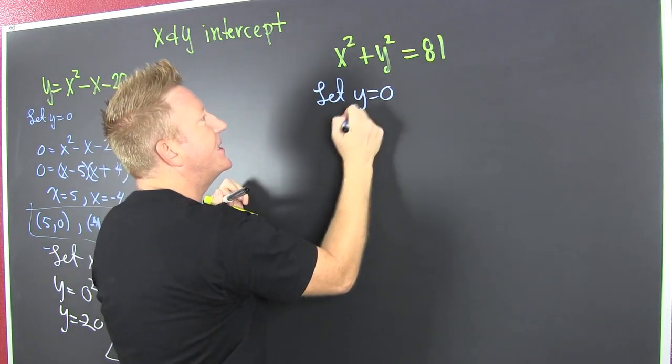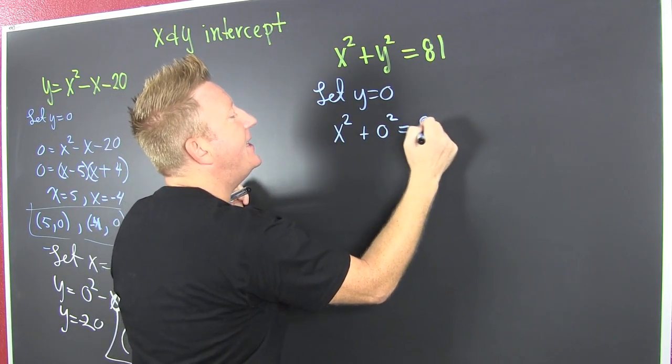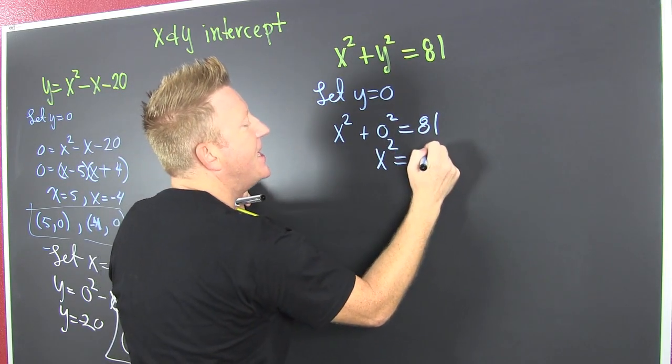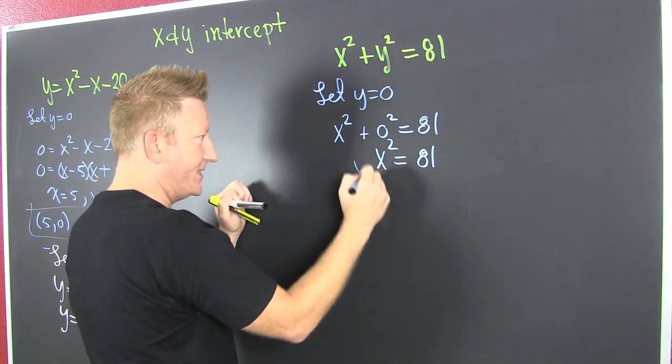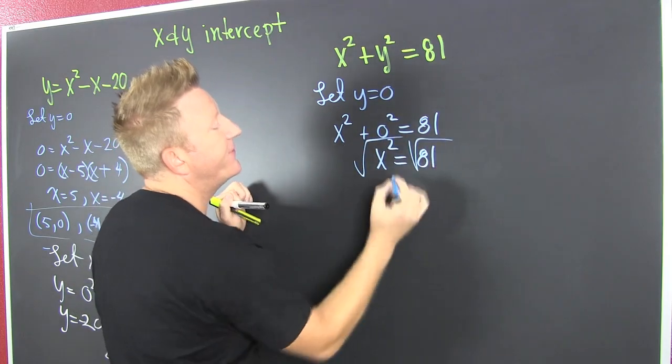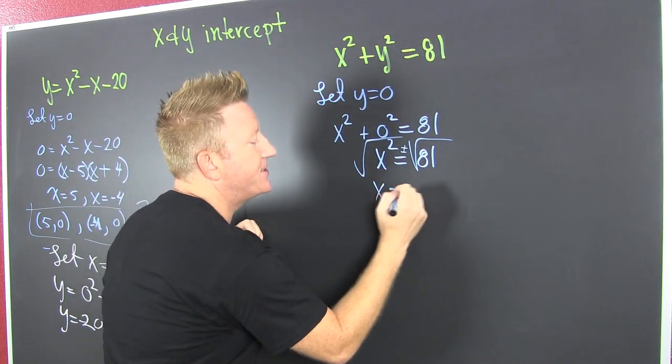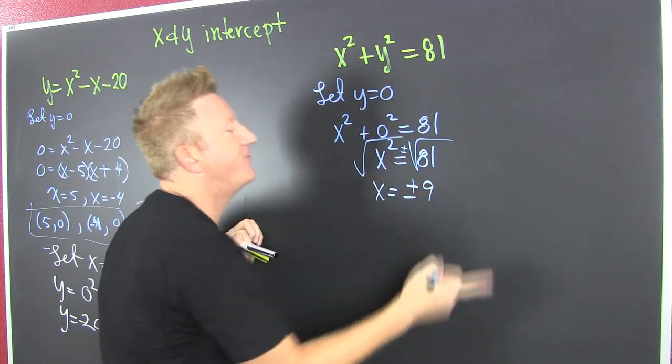So, that looks like it's x squared plus 0 squared is 81. Wait for it! X squared is 81. Then I take the square root of both sides, but I'm not going to forget the plus or minus. So, then x turns out to be plus and minus 9. Fine!